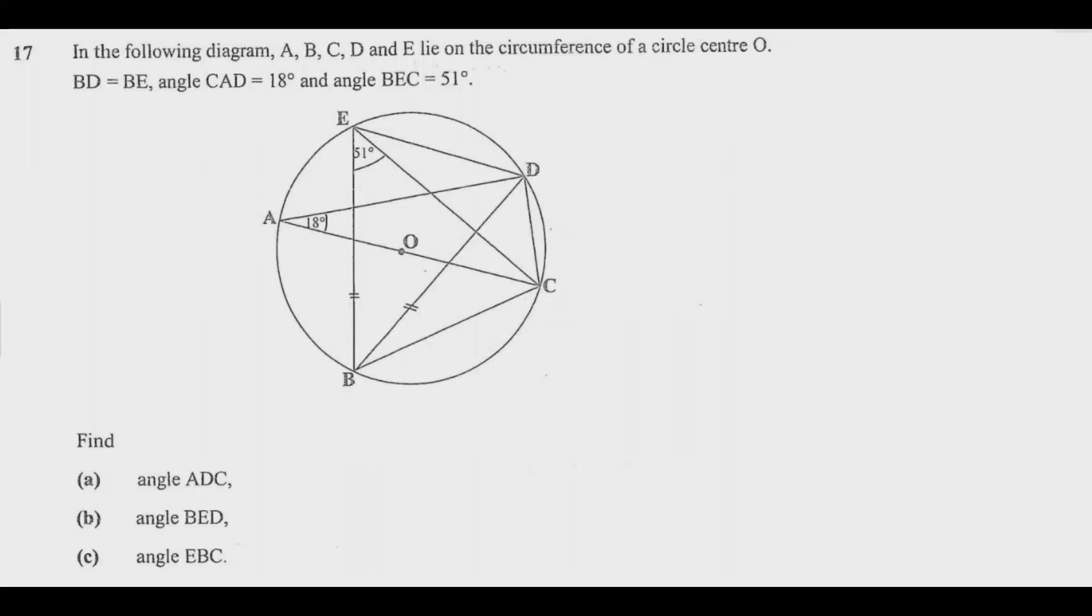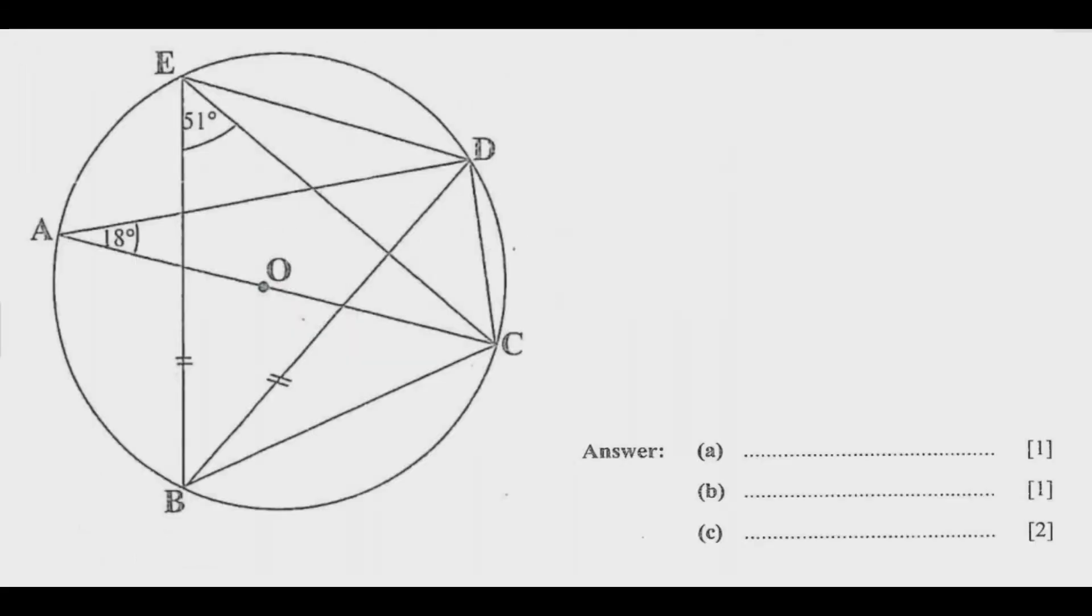Find angle ADC, angle BED, and angle EBC. When you look at circle theorem questions, you'll notice that most are easy to answer as long as you understand some key principles. Once you understand these properties of circle theorems, you'll find this question easy. Let's find as many angles as possible from these few principles. I've gone to a bigger screen so we can see clearly.